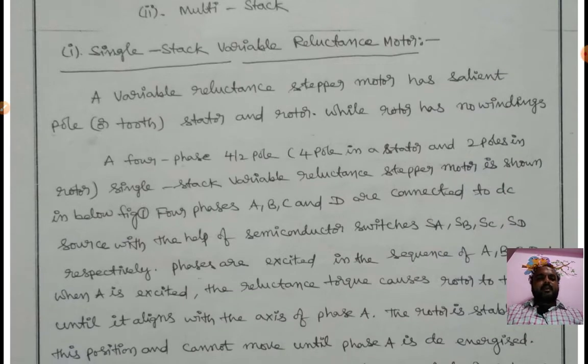In single stack, a variable reluctance stepper motor has salient pole stator and rotor, while rotor has no windings. A four-phase, four by two pole - that is four poles in stator and two poles in rotor - single stack variable reluctance stepper motor.